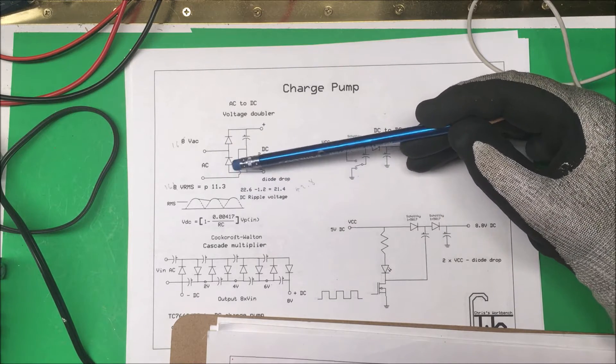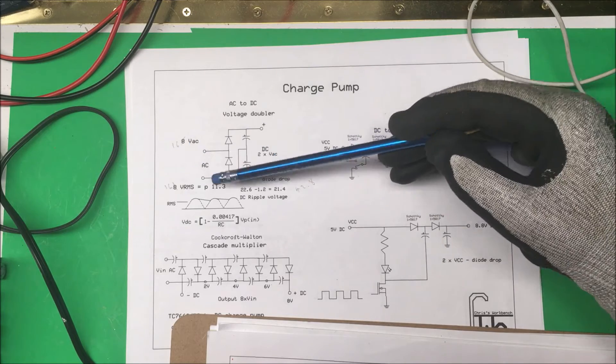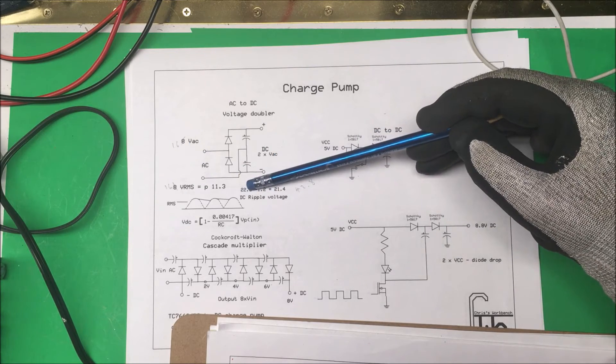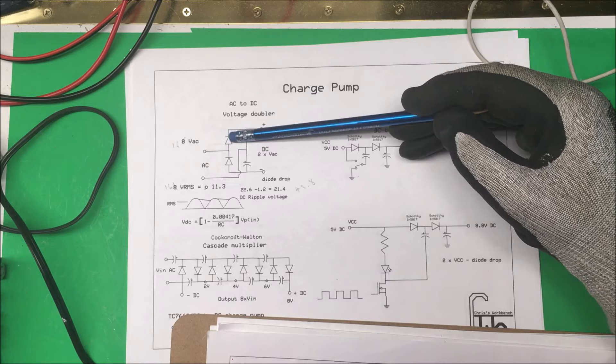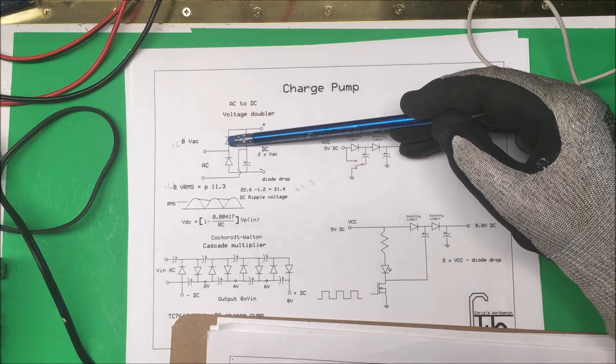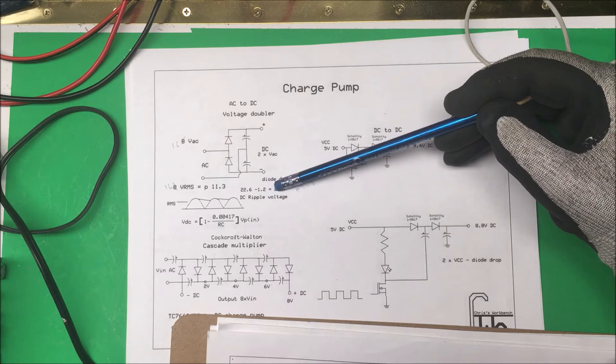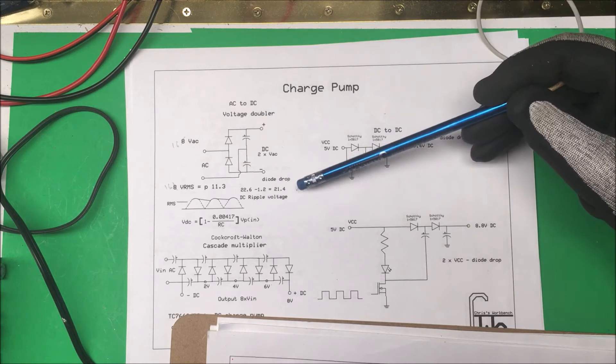The peak of a 16 volt RMS is about 22.6 volts, and we need to take off about 0.6 for the diode drop, so that comes out to 21.4, and we double that to 42.8 volts.